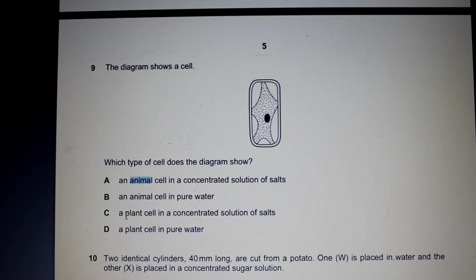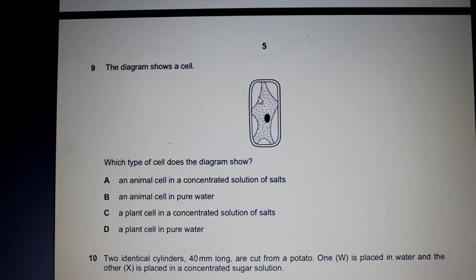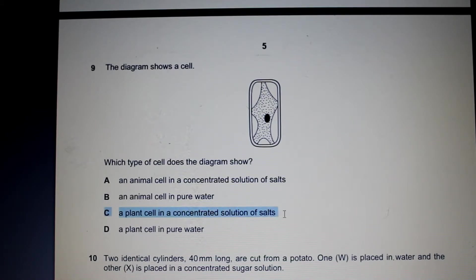Let's take a look at C and D. Option C says a plant cell in a concentrated solution of salts. That would make sense because this cell has lost water. If there's a higher concentration of salts outside the cell than inside, water would move out of the cell to the environment. So C would be correct.